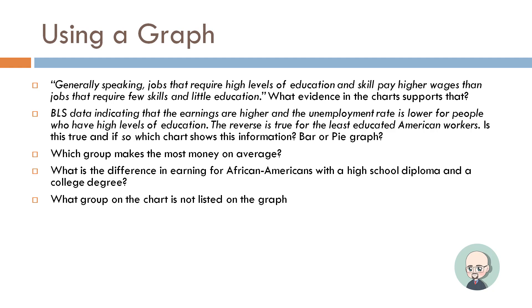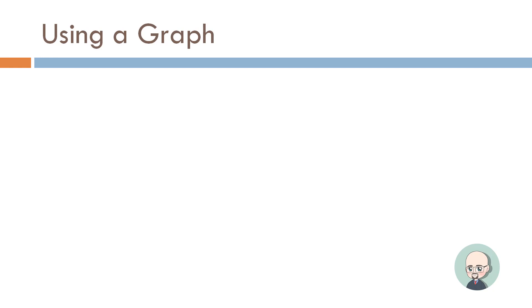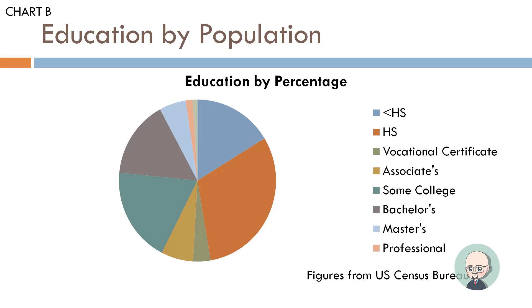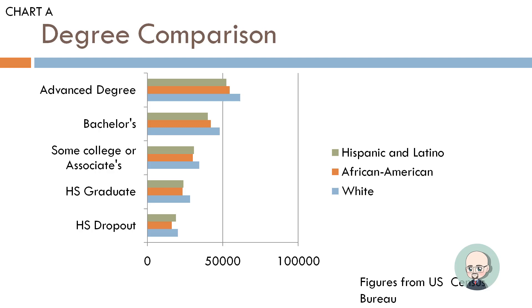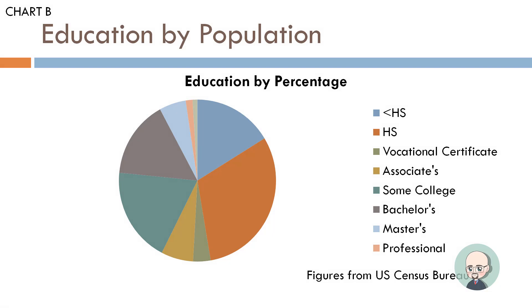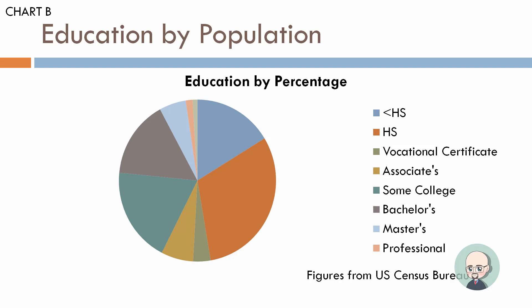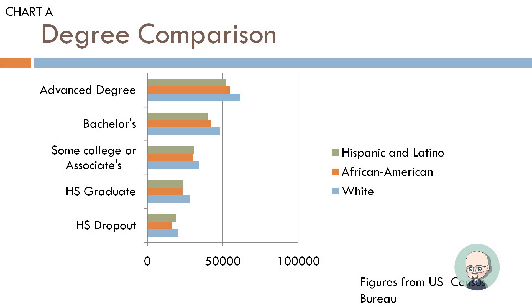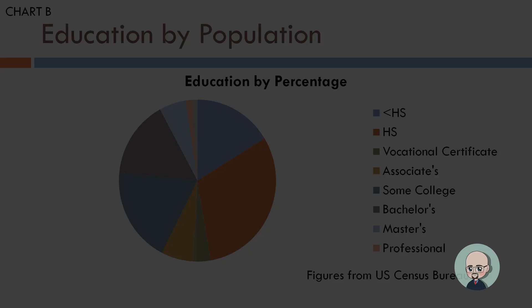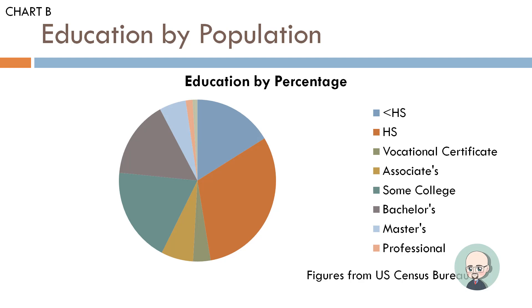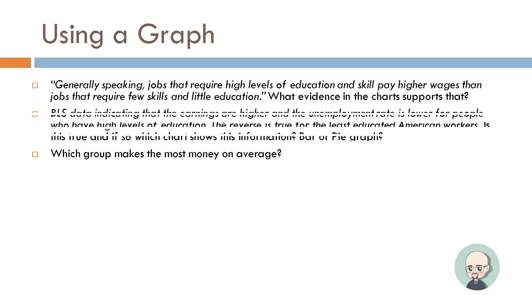What group on the chart is not listed on the graph — what's in Chart A but not Chart B, or vice versa? Looking carefully, Chart B distinguishes professional degree and master's separately, whereas Chart A just has 'advanced degree.' So there are fewer categories in Chart A versus Chart B in terms of educational attainment, and that could cause some confusion — we have to be mindful of that.